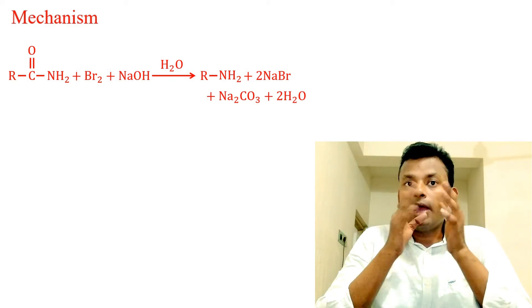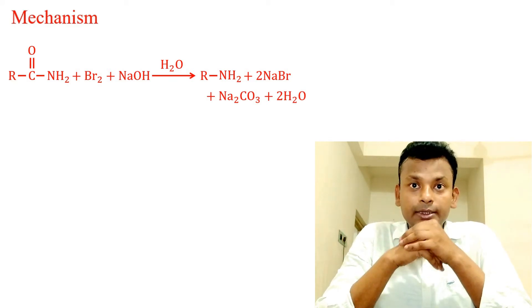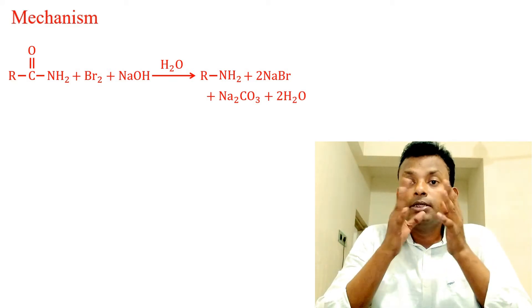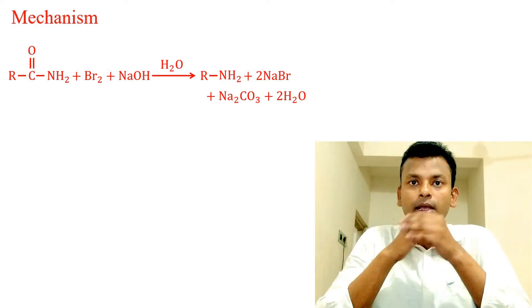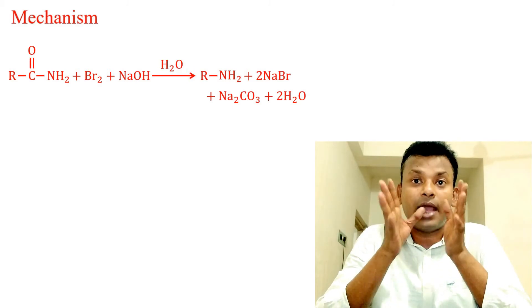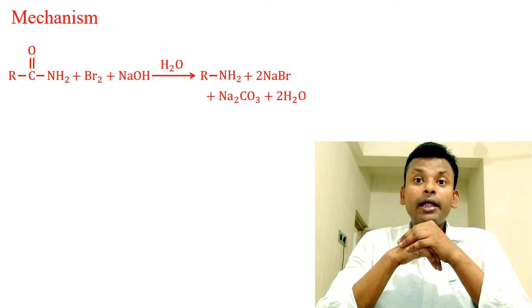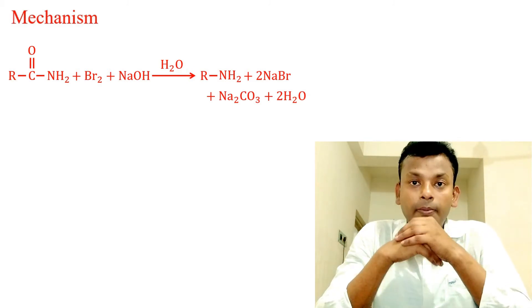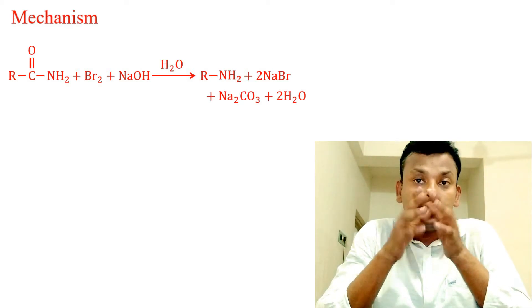From this equation we can see that the carbonyl carbon atom of the amide is lost as CO3 2-negative, and the R group, that is the alkyl group of the amide, becomes attached to the nitrogen of the amine.